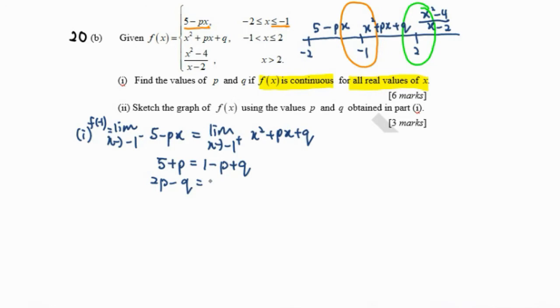Simplifying this equation, we get p minus q equals negative 4, which is our first equation.